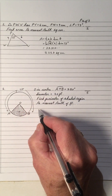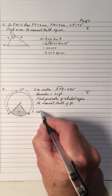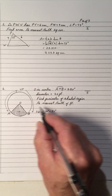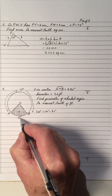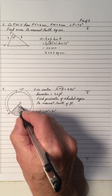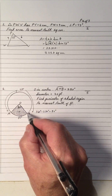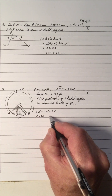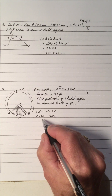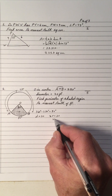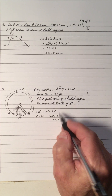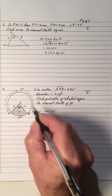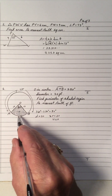Since arc ATB is 280°, we have 360° minus 280° which gives us 80°. So arc AB is 80°, meaning the central angle is also 80° because the central angle equals the arc measure. The diameter is 20, so 2R = 20, which means R = 10. So the radius is 10 feet, OA = 10 and OB = 10.